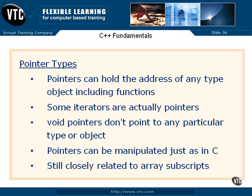Some of the iterators in C++ containers are in fact pointers, like the iterator for a vector — that's really a pointer to the current element in the vector. Void pointers don't point to any particular type or object; they can hold any address in memory.